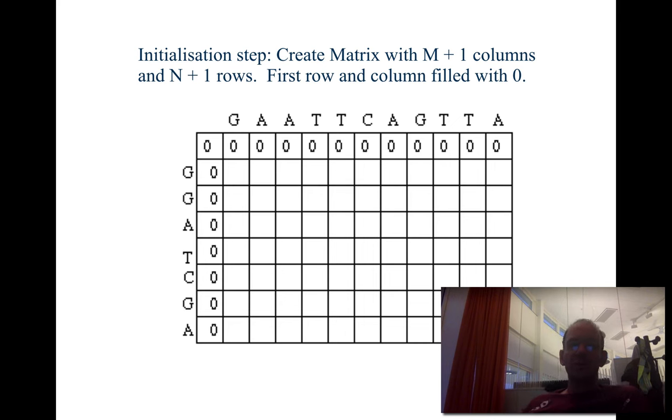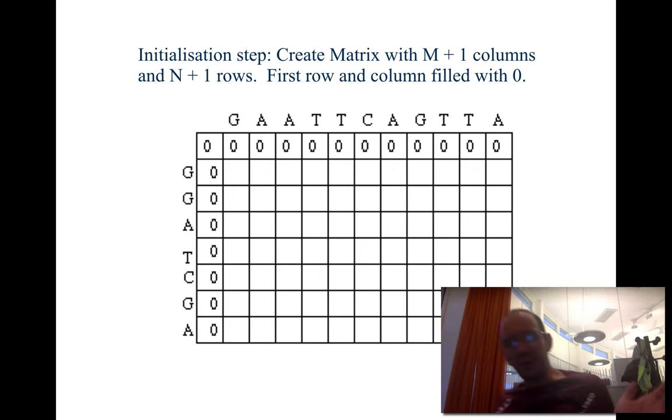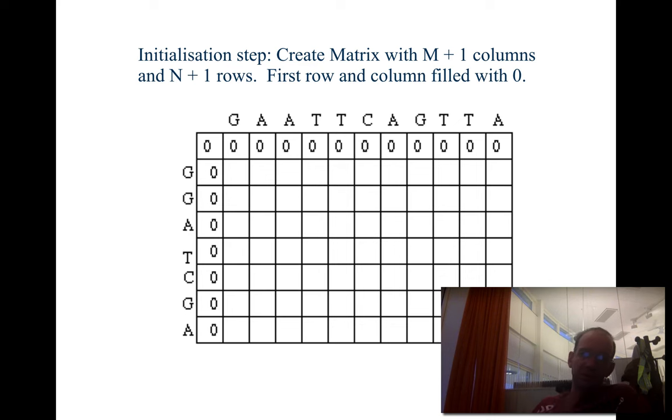Let's try to align these two sequences: G-A-A-T-T-C-A-G-T-T-A versus G-A-A-T-C-G-A. You can see the sequences start similarly and have the same letters, but in between there are different things. It's not obvious what the optimal alignment is. We start by filling the matrix with zeros, because if we have nothing aligned, we have no score at all.